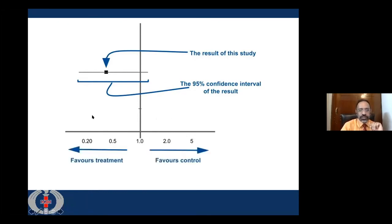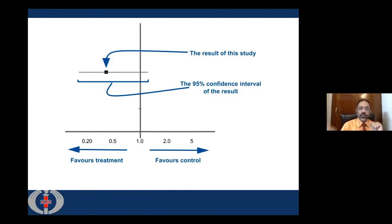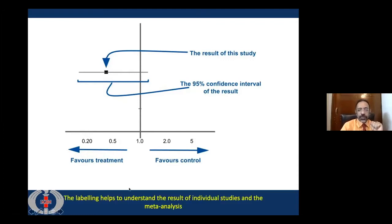It is a good idea to label what the study shows below the horizontal line. If most of the studies are on the left side in a comparison between treatment and control, we can say the meta-analysis favors treatment; if on the other side, it favors control. For example, when comparing tenofovir with entecavir for hepatitis B, both sides will be a treatment arm, but one side will be tenofovir and the other will be entecavir. The labeling helps to understand the result of individual studies in the meta-analysis.